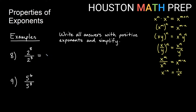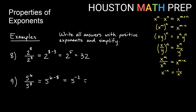For 2 to the eighth over 2 cubed, we subtract exponents: 2 to the 8 minus 3, which is 2 to the fifth, and that equals 32. For 5 to the sixth over 5 to the eighth, we subtract: 5 to the 6 minus 8, giving 5 to the negative 2. A negative exponent means reciprocal, so that's 1 over 5 squared. Since 5 squared is 25, the final answer is 1 over 25.